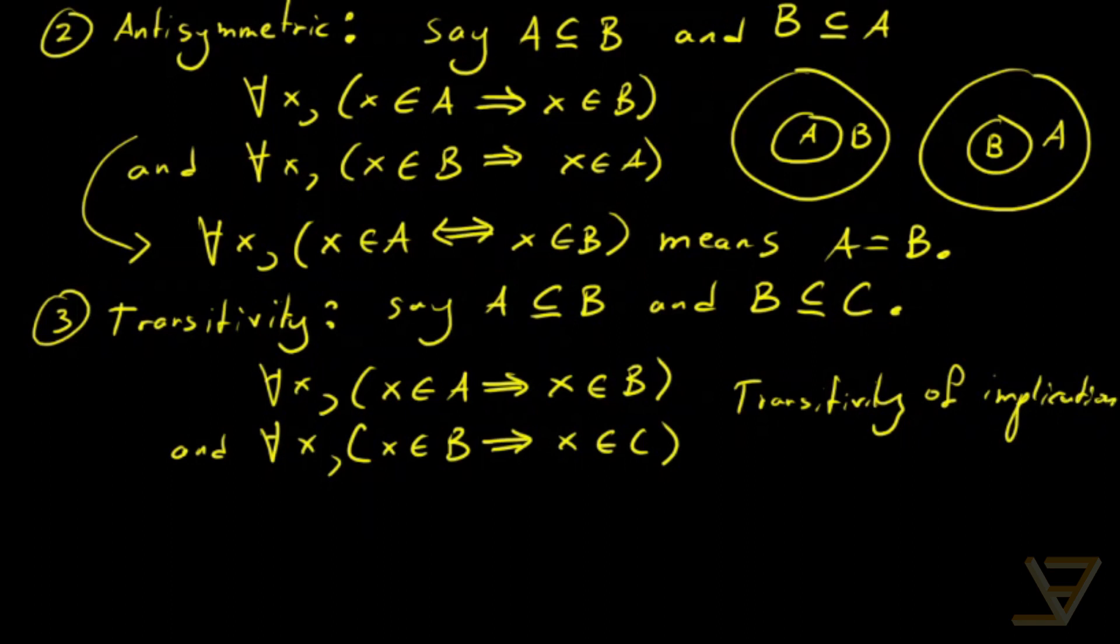What this tells us is that for all x, if x is in A, then x is in C. And that means A is a subset of C as desired.